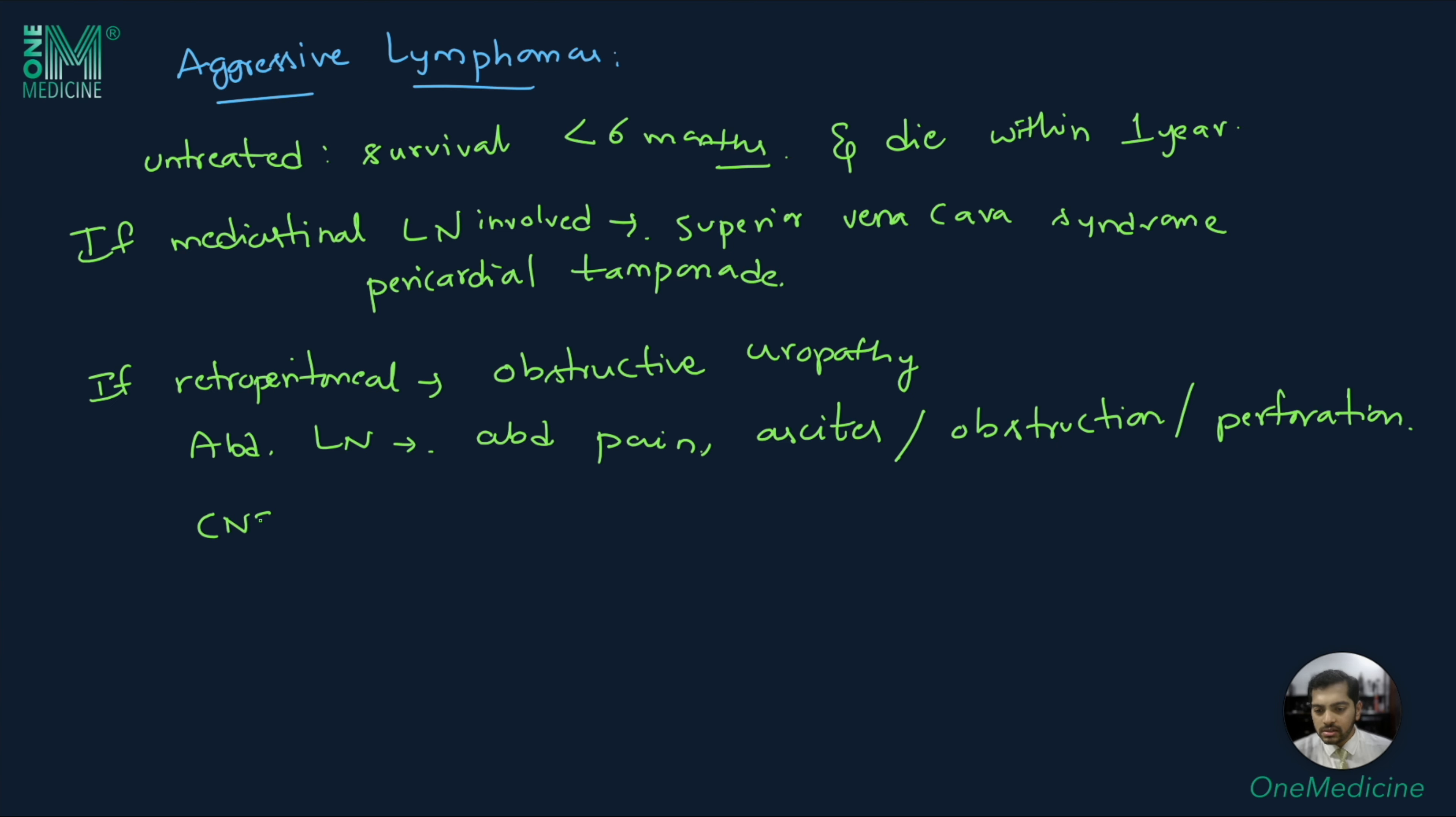If CNS is involved, the patients can have confusion, cranial nerve palsies, headache, seizures, and even spinal cord compression. If bones are involved, patients can have pathologic fractures. About 45% of the patients have B symptoms, that is fever, night sweats, and weight loss.